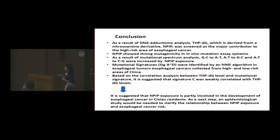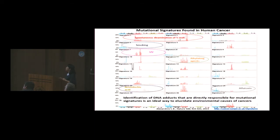In conclusion, using the adductome analysis, it is suggested that NPIP exposure is partly involved in the development of esophageal cancer in Cixian residents. An epidemiological study will be needed to clarify the relationship between NPIP exposure and esophageal cancer risk. I have also shown that DNA adductomics is very useful for screening specific DNA adducts. Many mutational signatures are thought to reflect etiology and exposure, but the etiology underlying most signatures is still not known. Identification of DNA adducts directly responsible for mutational signatures is an ideal way to elucidate the environmental causes of cancer.